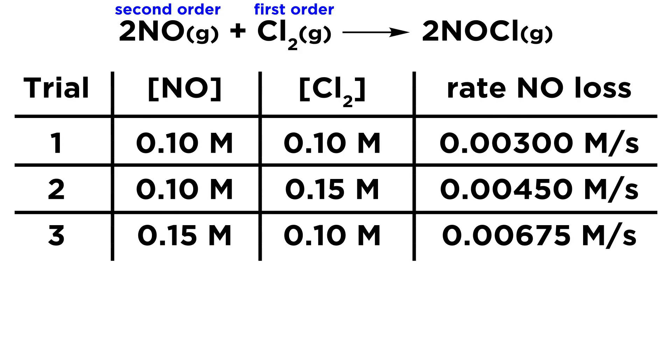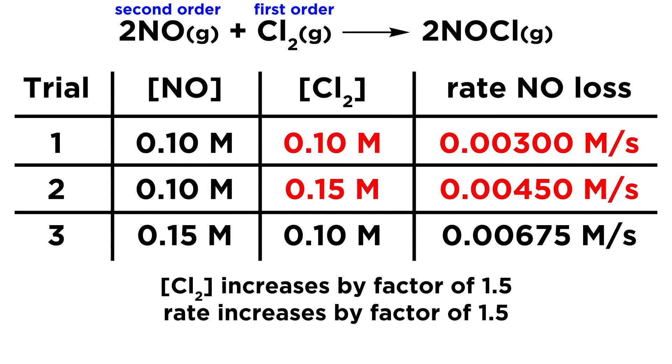However, if that seemed a little bit confusing, there's also another way to rationalize it where we don't have to do quite as much arithmetic. We can just say that the Cl2 concentration increases by a factor of 1.5, the rate increases by a factor of 1.5, and 1.5 equals 1.5 to the 1, so it is first order in Cl2.